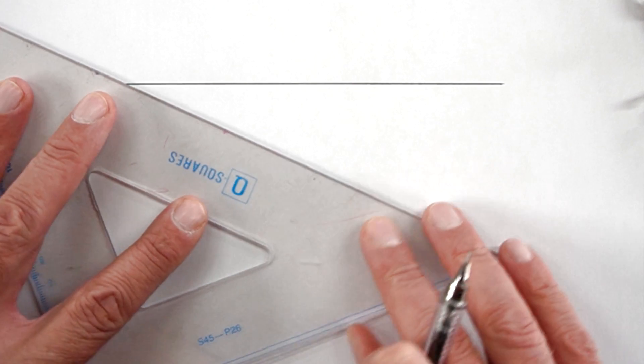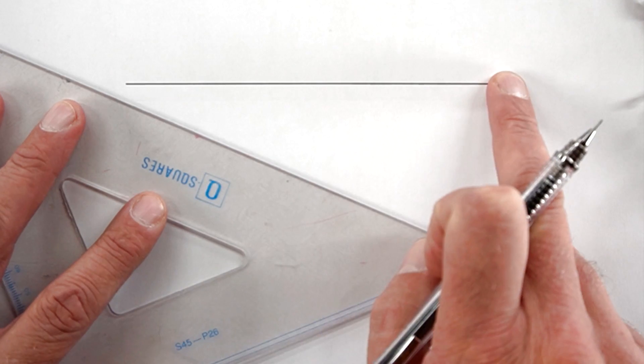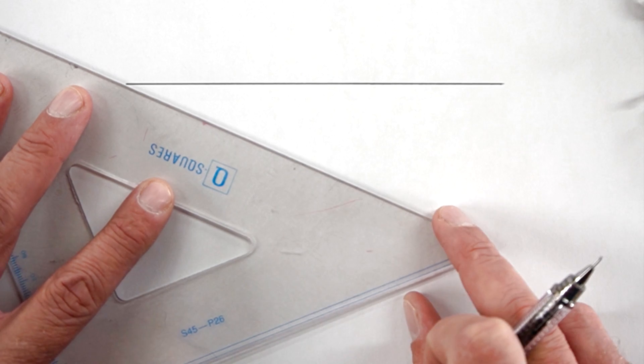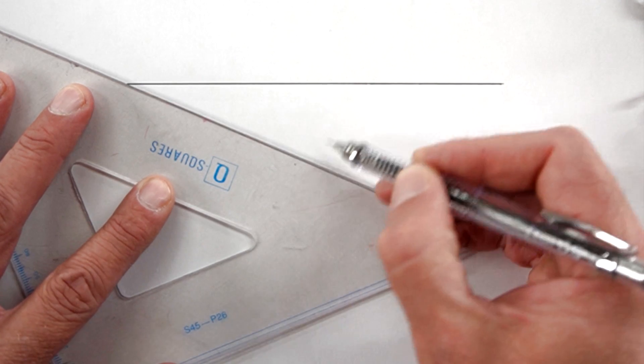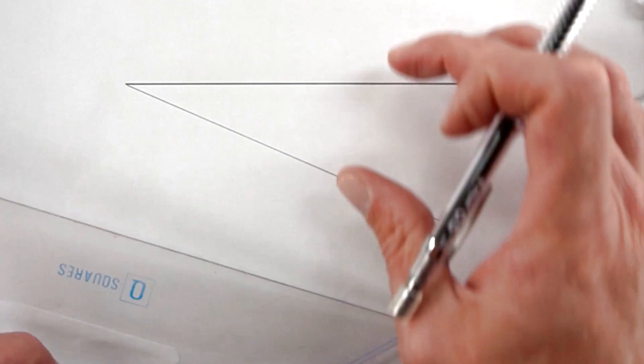The second step is to take your triangle, and at any angle on one of these sides you are going to draw a construction line. As I said, this angle here doesn't matter. Roughly 30 degrees is the easiest for me, but it could be less or more.